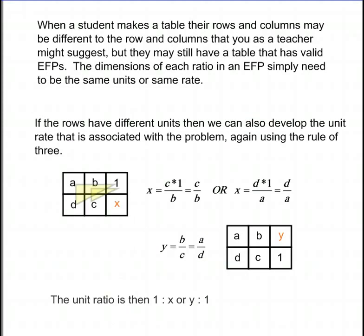When a student makes a table, their rows and columns may be different to the rows and columns that you as a teacher might suggest, but they may still have a table that has valid equivalent fraction pairs. The dimensions of each ratio in an equivalent fraction pair simply need to be the same units or the same rate.